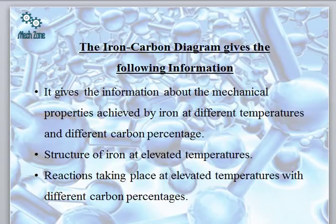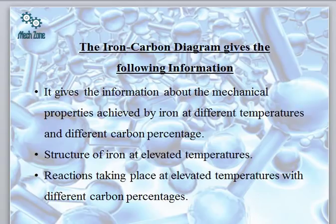First we will discuss what information is given by the iron-carbon diagram. The first point is it gives us information about the mechanical properties which are achieved by iron at different temperatures and different carbon percentages. That means if we vary the temperature and the carbon percentage in iron, the corresponding mechanical properties will be indicated by the iron-carbon diagram.